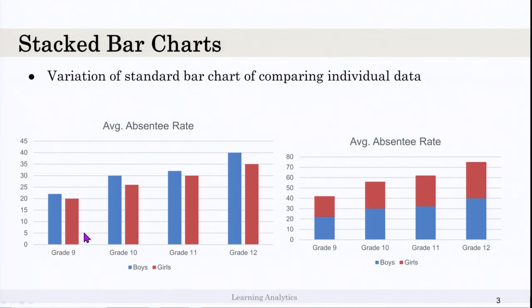The same chart can be represented as a stacked bar chart where both values will be stacked. The only drawback here is it is not clearly showing how much difference is between boys and girls. For example, here you can see that boys' absentee rate is on average high on all grades compared to girls. But in this chart, it is not clear, but this is another way of representing bar charts called stacked bar chart.